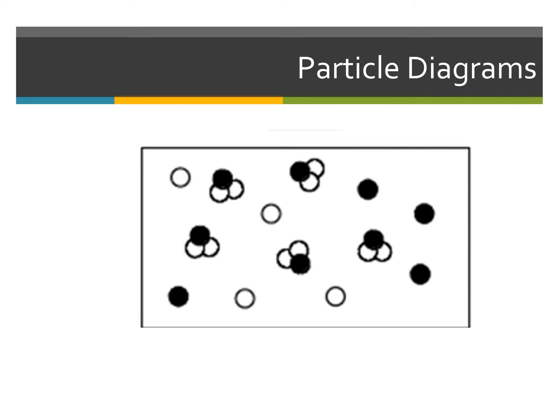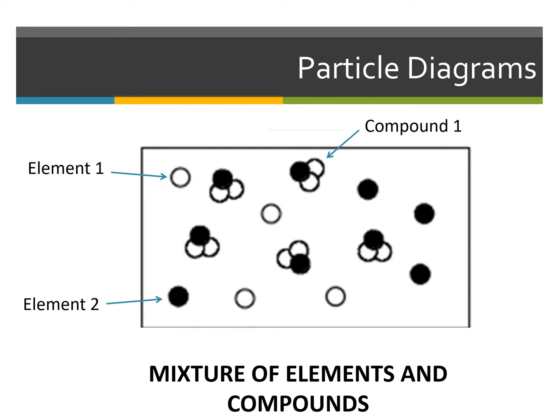Let's move on to this next one. We see some white particles, some black particles, and some white and black particles that are touching. The separate white particles are an element, and the separate black particles are also an element, because they are not touching. The ones that are touching are a compound, because they're chemically combined. So if I were to categorize this, it's going to be a mixture of elements and compounds, because they are in the same place but are different types — a heterogeneous mixture.